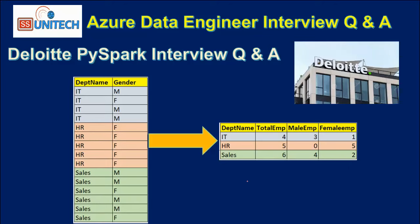Let's assume we have an input DataFrame with two columns: the first is the department name and the second is the gender. In the output, we want to have the department name, the total number of employees, how many male employees, and how many female employees. So how can we achieve this output?